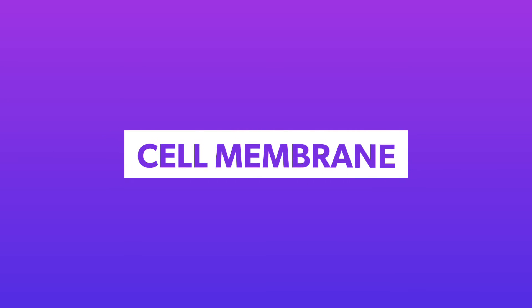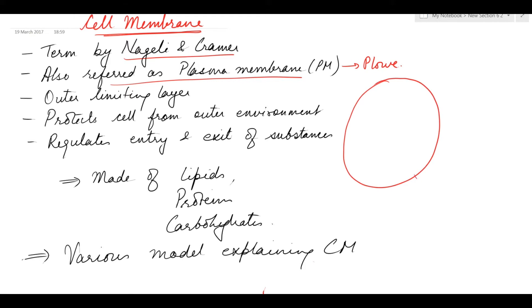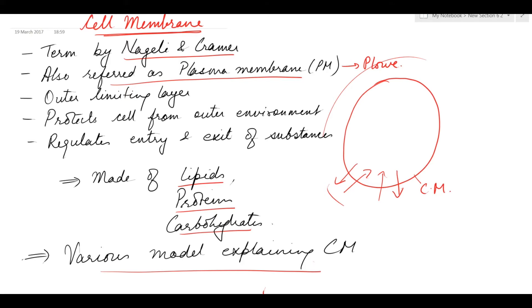Today's topic is the cell membrane. The term cell membrane was given by Nagali and Kramer. It is also referred to as the plasma membrane, a term given by Plur. The cell membrane is the outer limiting layer of the cell. It protects the cell from the outer environment and also regulates the entry and exit of substances. It is made up of lipids, proteins, and carbohydrates.